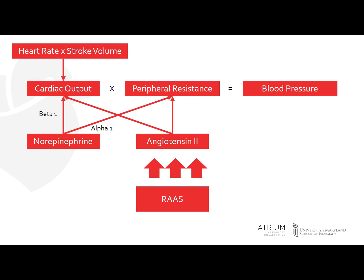By acting on the beta-1 receptors, norepinephrine stimulates an increase in your heart rate as well as your contractility. This then leads to an increase in your cardiac output. Norepinephrine also has an effect on the alpha-1 receptors, and this causes a potent vasoconstriction, which leads to an increase in your peripheral vascular resistance.